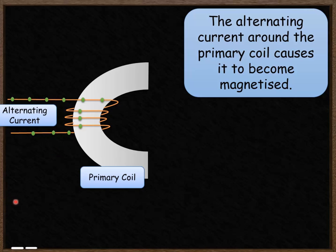We're now going to look at how that actually works in practice. Around your primary coil you have an alternating current, and the alternating current causes the primary coil to become magnetized. The electrons in the wire are moving backwards and forwards. This causes the iron core to become magnetized, and the magnetism is reversed at the same time that the current is reversed.